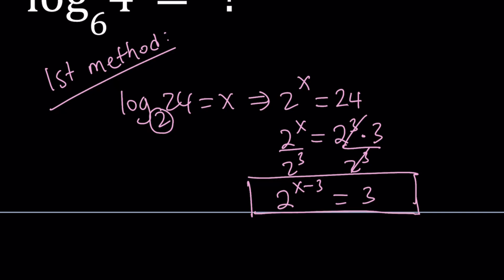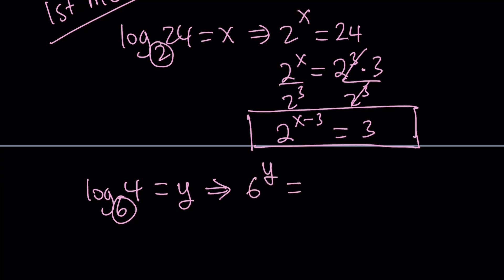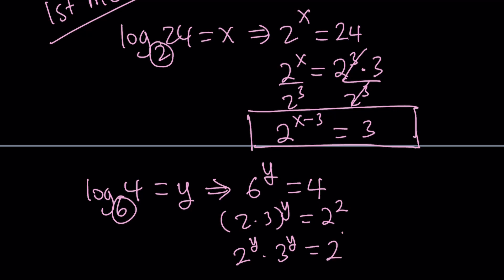Then I'll take the second expression, log 4 with base 6, and set it equal to another variable y. By using the definition again, we can write 6 to the power y equals 4. Now 6 can be broken down into 2 times 3, and 4 can be written as 2 squared. The y can be distributed — that should be 2 to the second power.